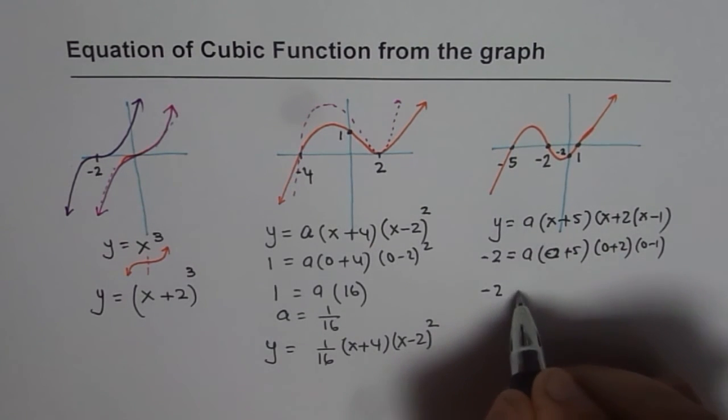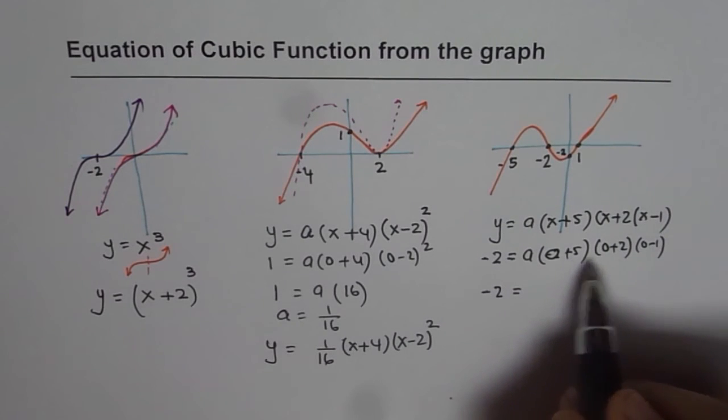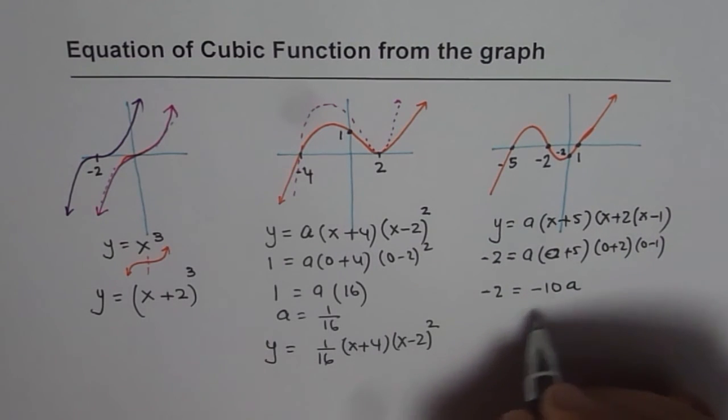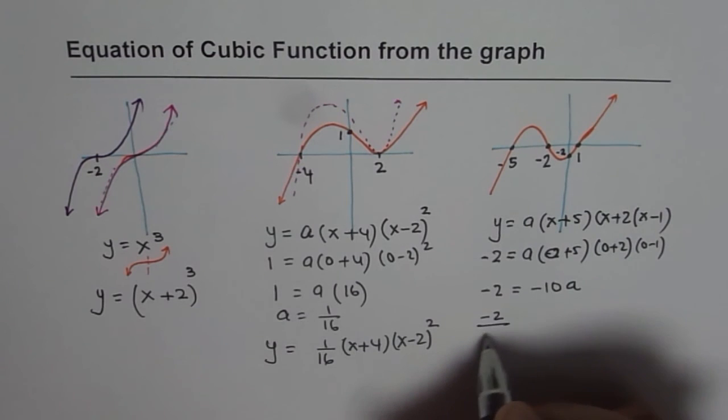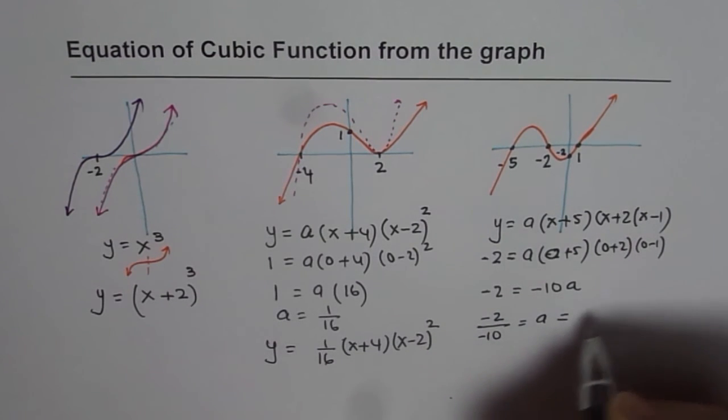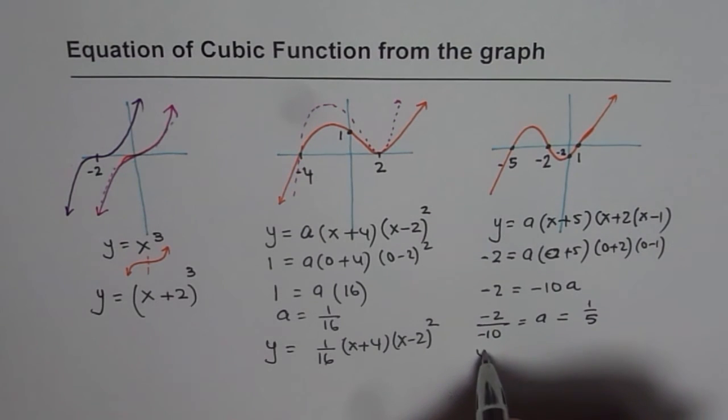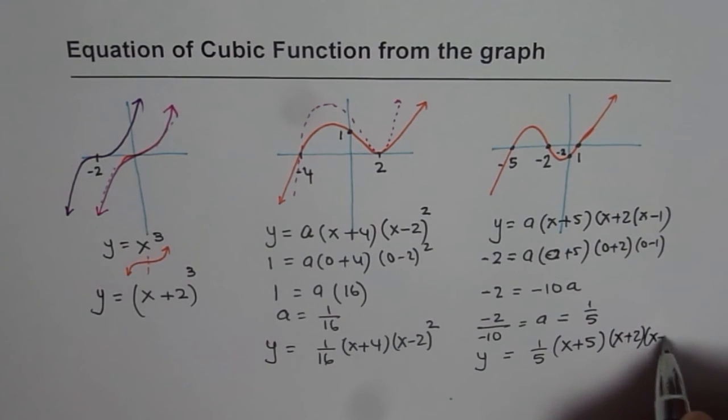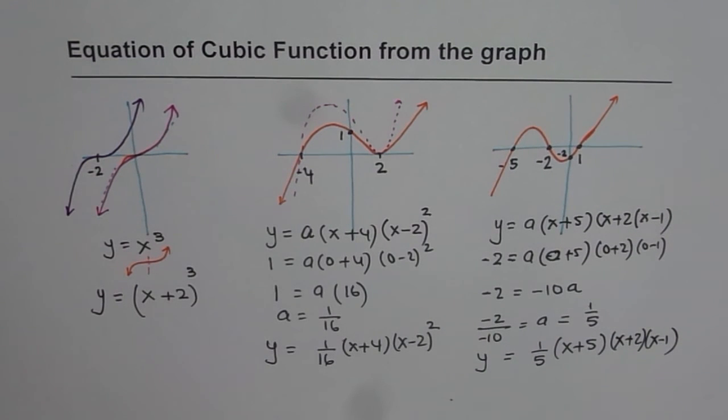Now, so we have minus 2 equals to 5 times 2 is 10, 10 times 1 is 10. And these two are positive. This is negative. So it is minus 10a. So that gives us minus 2 divided by minus 10 is equal to a, which is equal to 1 over 5. And therefore, the function is y equals to 1 over 5 x plus 5 times x plus 2 times x minus 1. That becomes the equation which represents this kind of a cubic function with three different zeros and a given point.